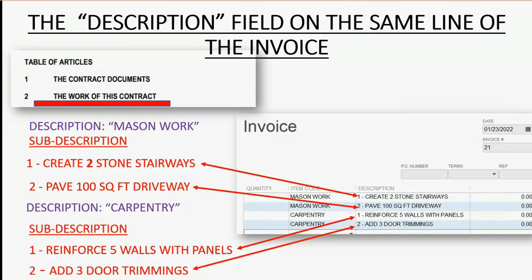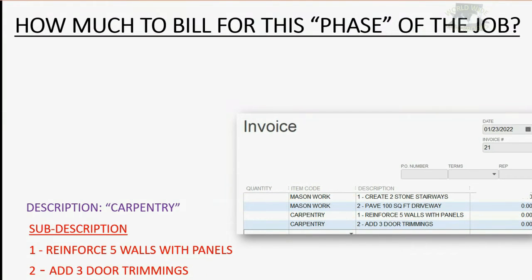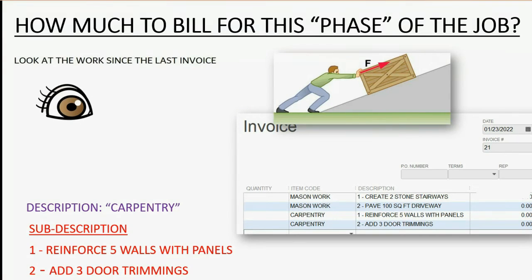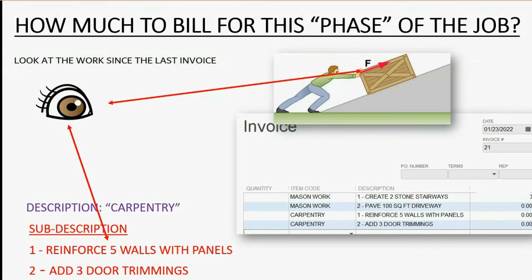The question is, how do you know how much to bill for any particular phase of the job? It's common sense: you would physically look at all the work that had been done for that particular item since the last invoice, count it, use math, and then compare it to the sub-description exactly as it's written in the contract. Then you would decide for that particular invoice, for that part of the job, exactly how much to bill — comparing the work to what it says in the contract.